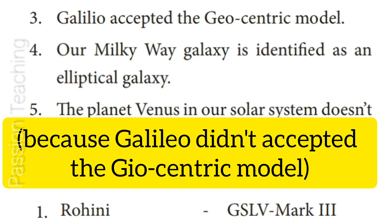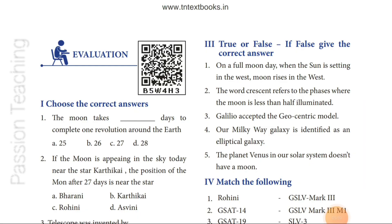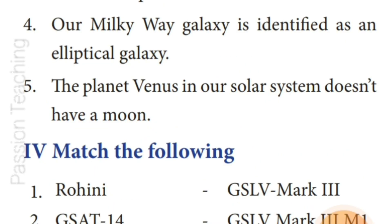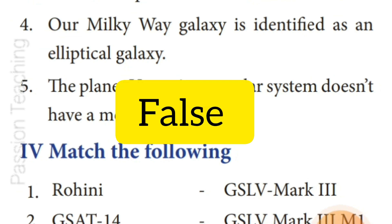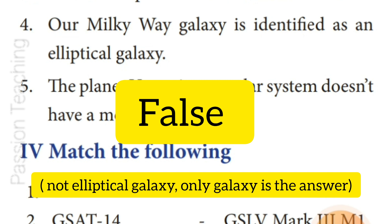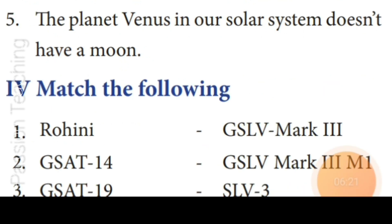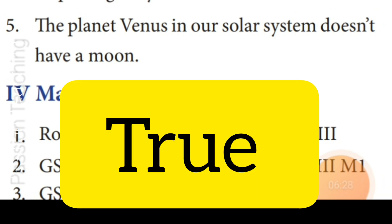Question 3: Galileo accepted the geocentric model — Answer: False, because Galileo did not accept the geocentric model. Question 4: Our Milky Way galaxy is identified as an elliptical galaxy — Answer: False; our Milky Way is a Spiral Galaxy. Question 5: The planet Venus in our solar system does not have a moon — Answer: True.